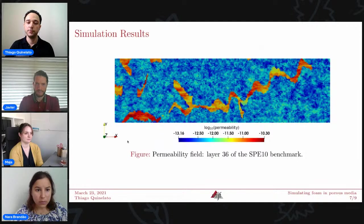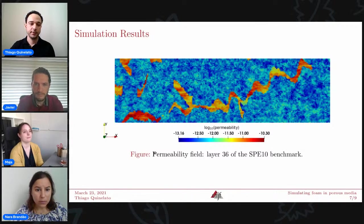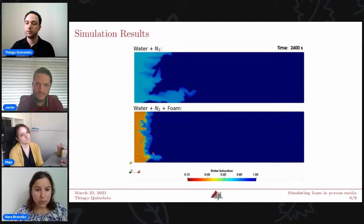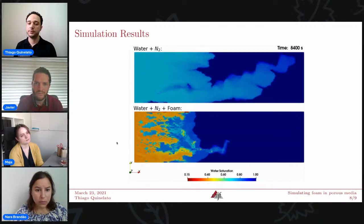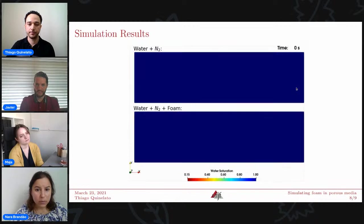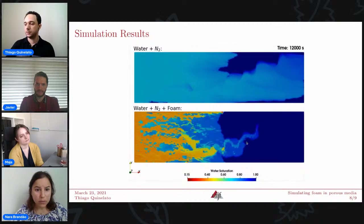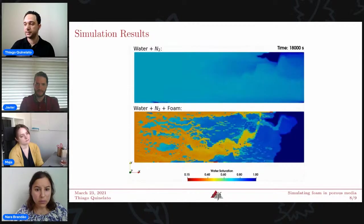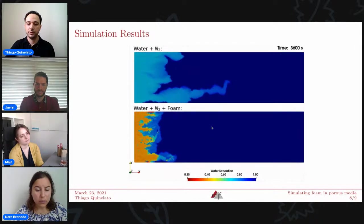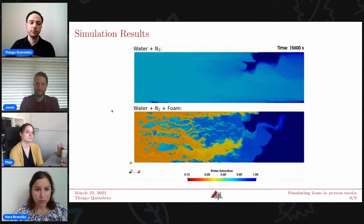For a second example, we use layer 36 of the SPE-10 benchmark. And this layer shows a clear preferential path here. The initial and boundary conditions here are the same as before. So again, we can see that the gas front in the case with foam is much more regular than in the case without foam. And the gas breakthrough occurs later. And although some fluid still takes this preferential path, we can see that the sweep efficiency was greatly improved by the usage of foam here compared with the no foam case.